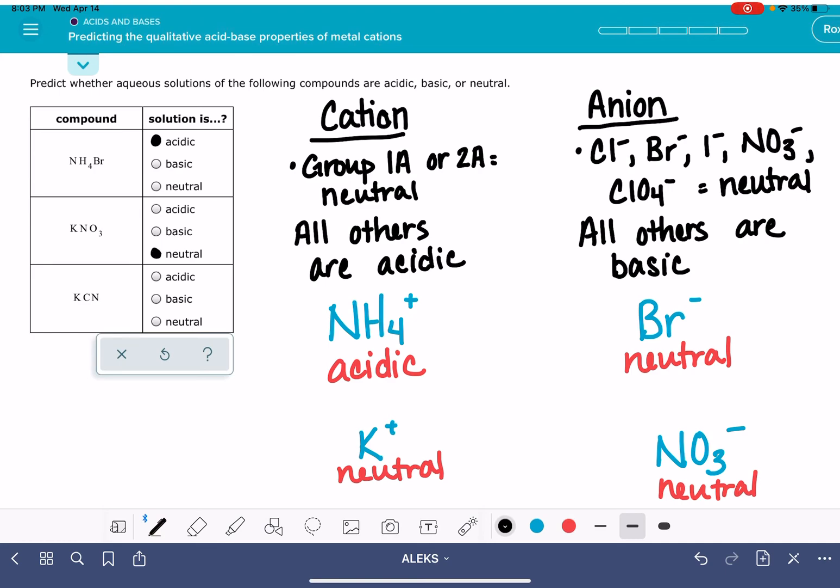The last one that we have here on our list is KCN. We have K+, and CN-, K+, as we just saw, is neutral. CN-, is not one of these five neutral anions, which means that it is basic.